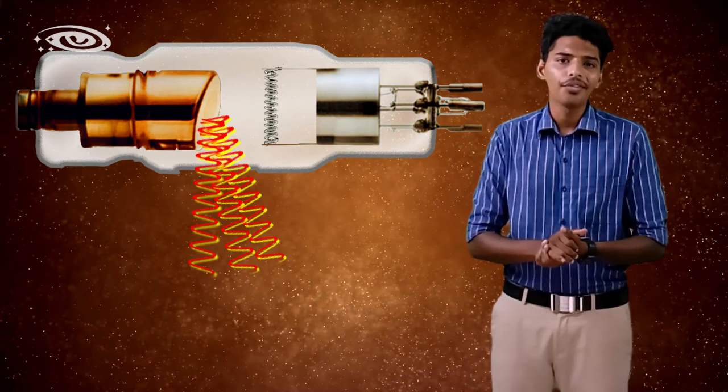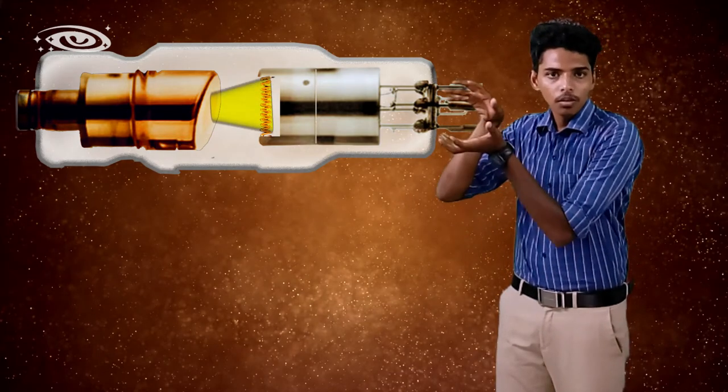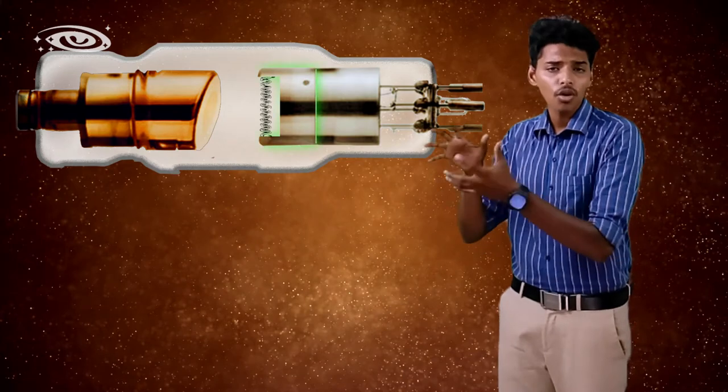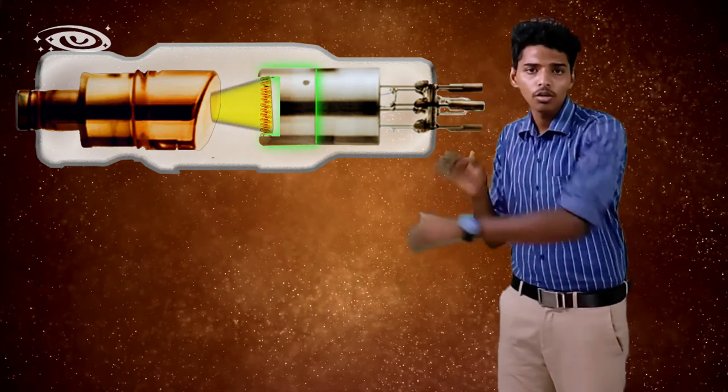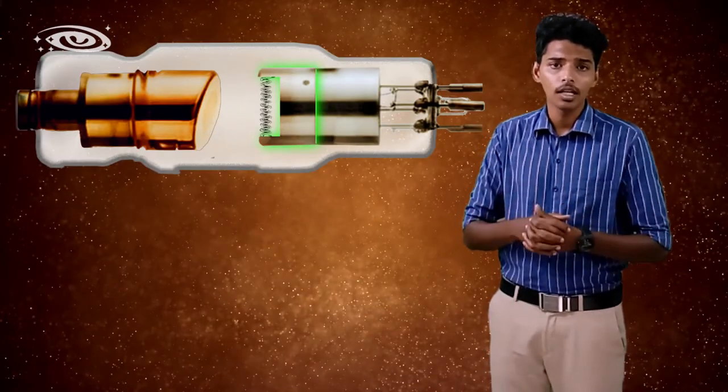For this reason, we focus the electrons by using a focusing cup. We give an additional strong negative charge to the focusing cup to focus the electrons to the focal spot. This is the reason for using a focusing cup in the cathode.